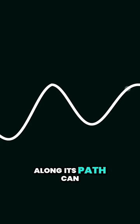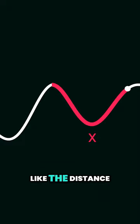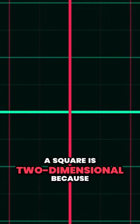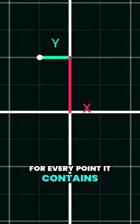As every point along its path can be uniquely identified with one single coordinate, like the distance from a given origin. Likewise, a square is two-dimensional because we need at least two coordinates for every point it contains.